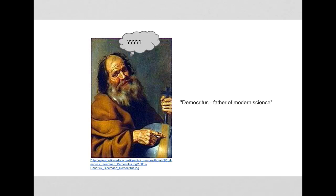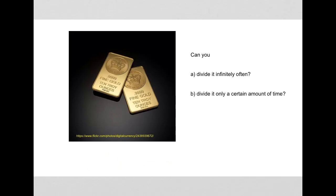The experiment is pretty simple in terms of thought experiments. Let's assume we simply have a bar of gold like this one here. We take a very sharp knife and we cut this bar in half. So we get two halves — two parts of this gold bar of similar size.